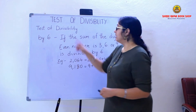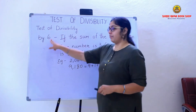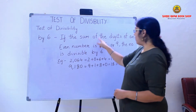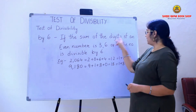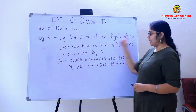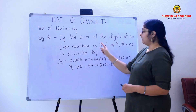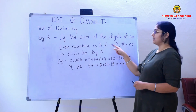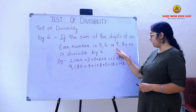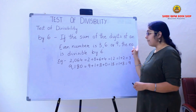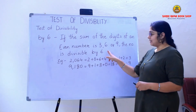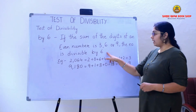Now we will learn the test of divisibility by 6. If the sum of the digits of an even number is 3, 6, or 9, the number is divisible by 6.